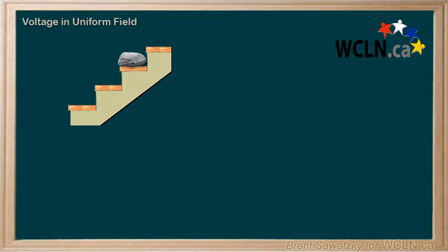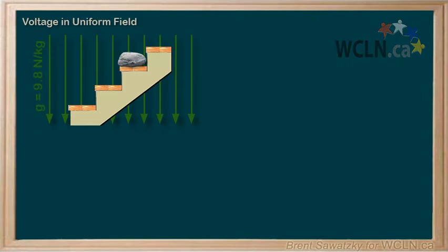Consider a rock on a staircase. We're near the surface of the earth here, so we're going to consider that we're in a uniform gravitational field. G equals 9.8 newtons per kilogram, or 9.8 meters per second squared, used more in motion questions. Both are perfectly correct uses of the same value.